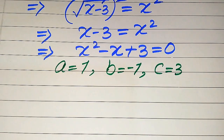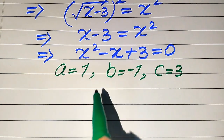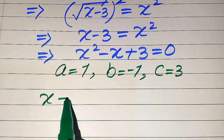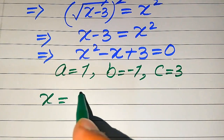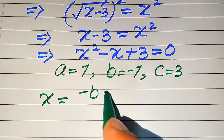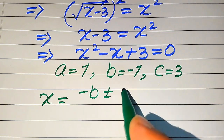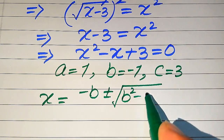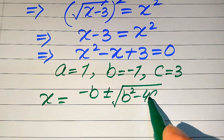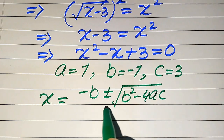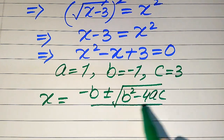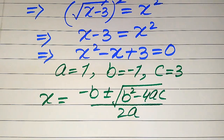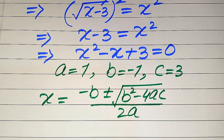We state the quadratic formula as: X equals minus b plus or minus square root of b squared minus 4ac, all divided by 2a. This is our quadratic formula.